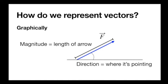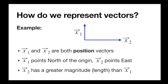In this case, I represented it by labeling an angle. An arrow has a length and a direction, so it's a great tool to use to talk about vectors. I've drawn two vectors here — x1 and x2 — position vectors that describe a position with respect to the origin. x1 points north, x2 points east, and we can see that x2 has a greater magnitude than x1.